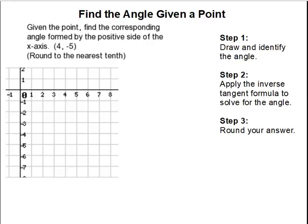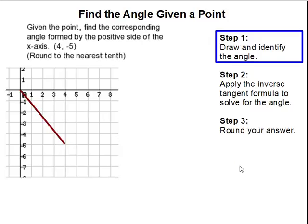Step 1: Draw and identify the angle. We are going to plot our point first — 4, negative 5. Then we are going to draw our line. This is the angle that we are going to be looking for, because it is the angle formed by the x-axis.